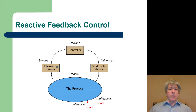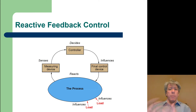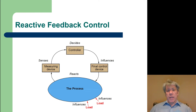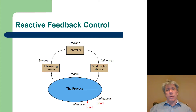In reactive standard feedback control, the process is somehow measured — you sense something about the process. The controller decides, based on the measurement versus what's desired, based on the error and different attributes of the error, what the final control device should be and how it should be manipulated. Like speeding your car uphill: you notice your speed dropping and press the gas pedal a little farther to maintain your desired speed. The problem with reactive control is that the controller can't do anything about disturbances until the disturbance has already affected the process — it's already too late. That's why there's any error at all, and reactive feedback control cannot compensate for things until they've already affected the process.